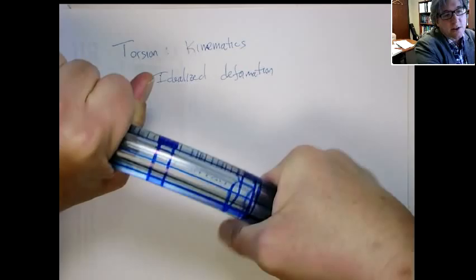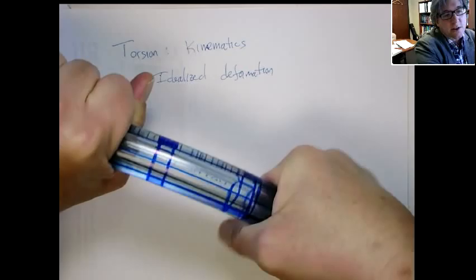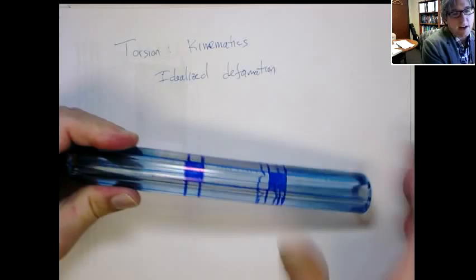Those circular cross-sections are like discs — you can imagine those. And they stay in the same plane, basically. There's not any significant deformation out of the plane.